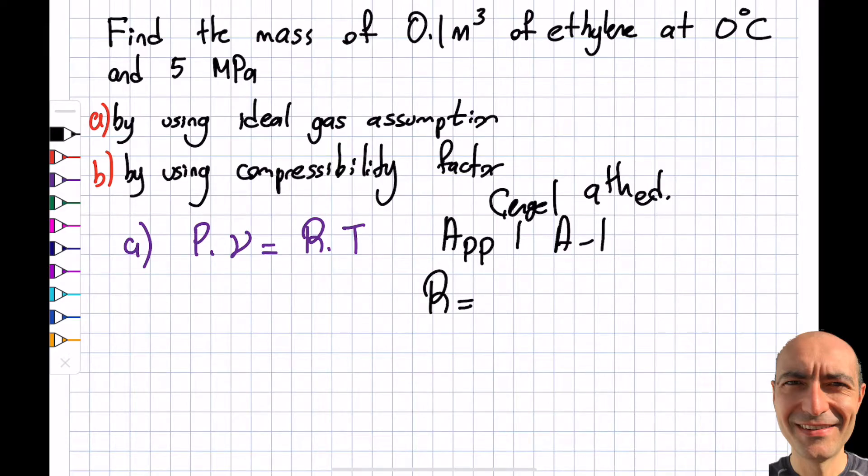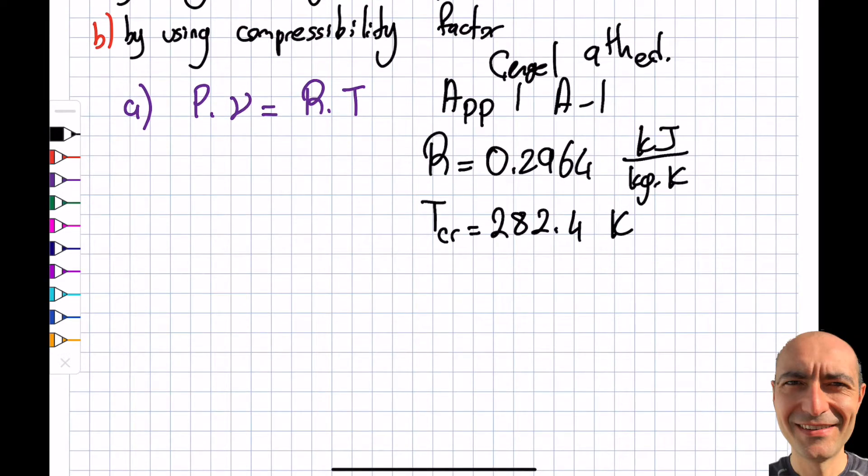I'm working with Cengel ninth edition. This is going to be 0.2964 kilojoule per kilogram kelvin. Be careful with the temperature scale. When I do the compressibility, I need the critical values from the same table. Critical temperature is 282.4 kelvin, while critical pressure is 5.12 megapascals.